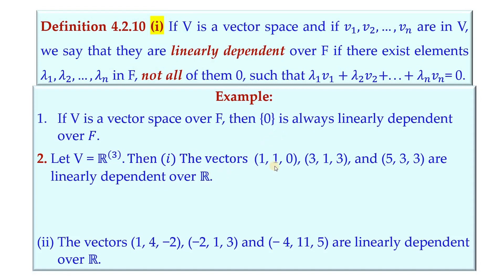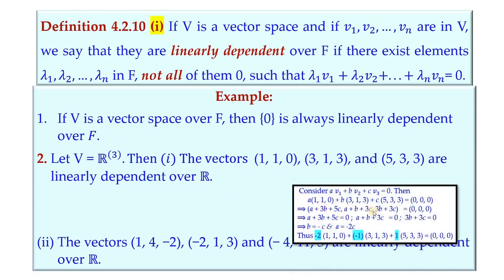If we consider the vectors (1,1,0), (3,1,3), and (5,3,3) in R³, they are linearly dependent over R. This can be established by considering A·v1 + B·v2 + C·v3 = 0. When we simplify, we get B = −C and A = −2C. Setting C = 1 gives B = −1 and A = −2, so without A, B, C all being zero, the linear combination is zero.